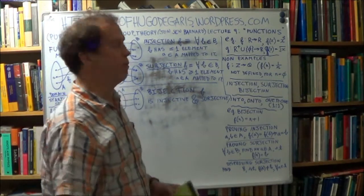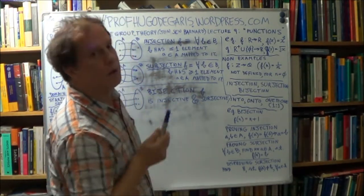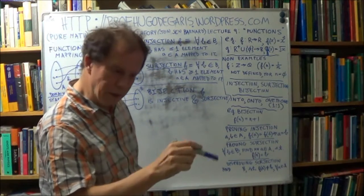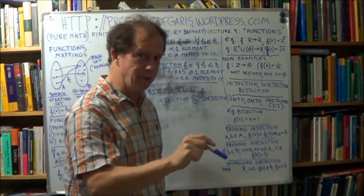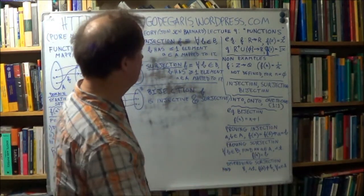Now, how about some non-examples, where the function supposedly defined, but when you go into detail, you find that it's not defined, and it just fails as a definition.